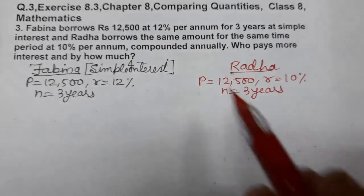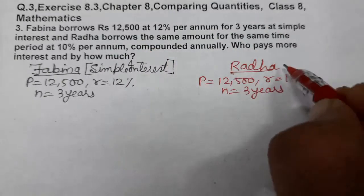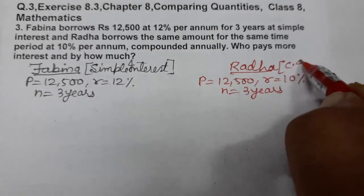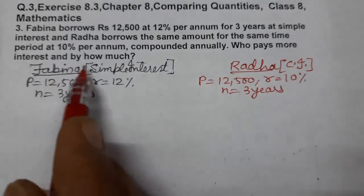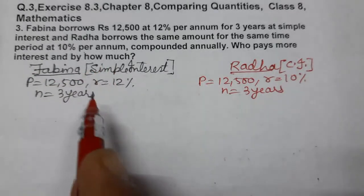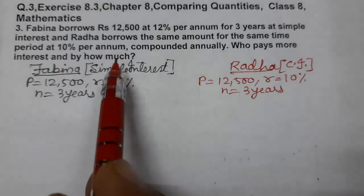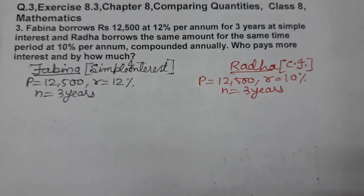For Radha, it's compounded annually. This is compound interest, compounded annually. Who pays more interest and by how much? We need to find who paid more and by how much. So let's start.